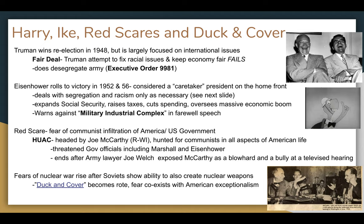Truman's one big success on the domestic level goes against the advice of one of his commanding officers — Dwight Eisenhower, who says no to desegregation. Harry Truman issues Executive Order 9981, which officially requires that the United States Army, Navy, and what will become the Air Force all desegregate. Good for Harry Truman. Truman thinks about running again in 1952 but decides not to, and instead Dwight Eisenhower runs against Adlai Stevenson of Illinois, and Eisenhower and his running mate Richard Nixon absolutely sweep to victory.